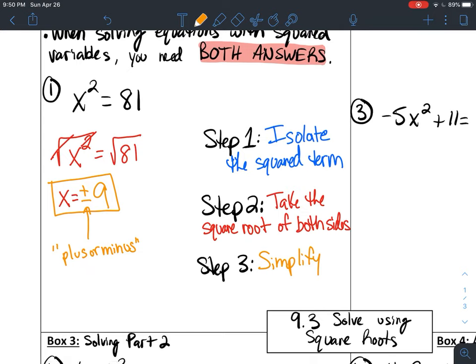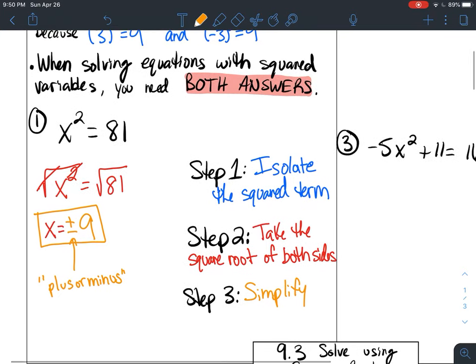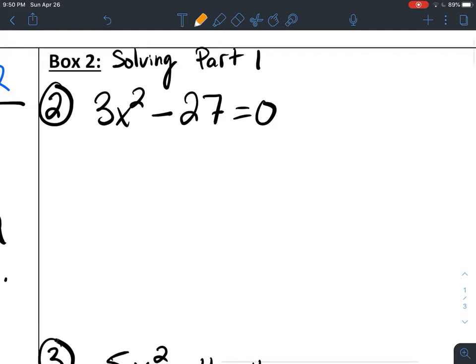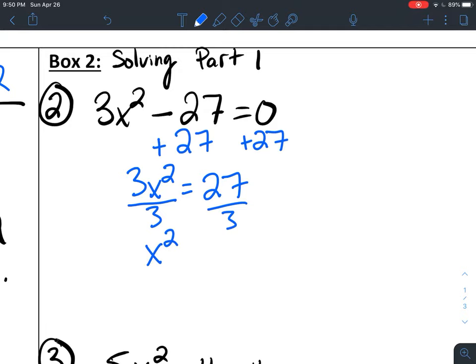In Box 2, now we do have something to do for step one. Remember, step one was to isolate my squared term. So here I'm going to start by adding 27 on both sides. That gives me 3x² equals 27. I'll divide by 3, giving me x² equals 9. Step two, square root both sides. Step three, simplify. In this case, the square root of 9 is 3, so I have plus or minus 3 for my solution.